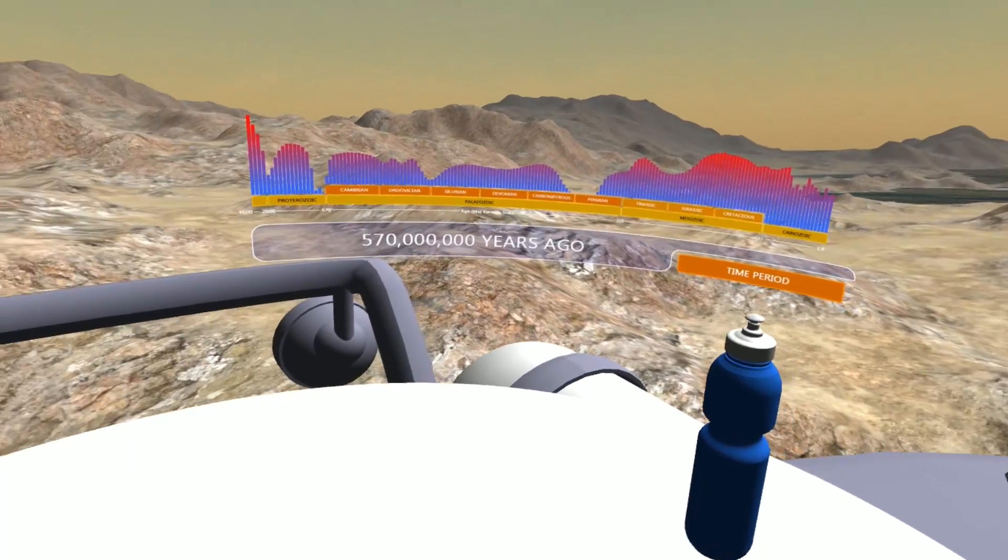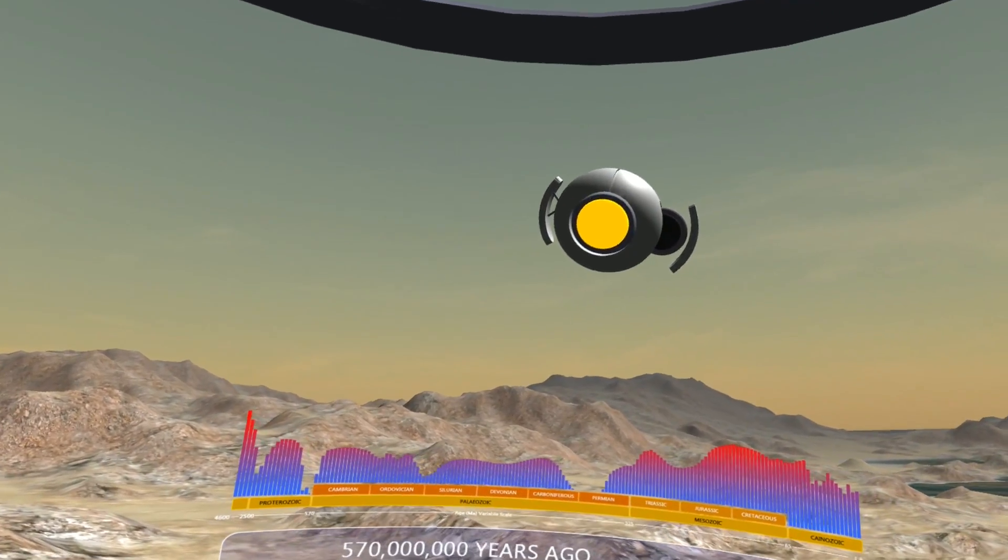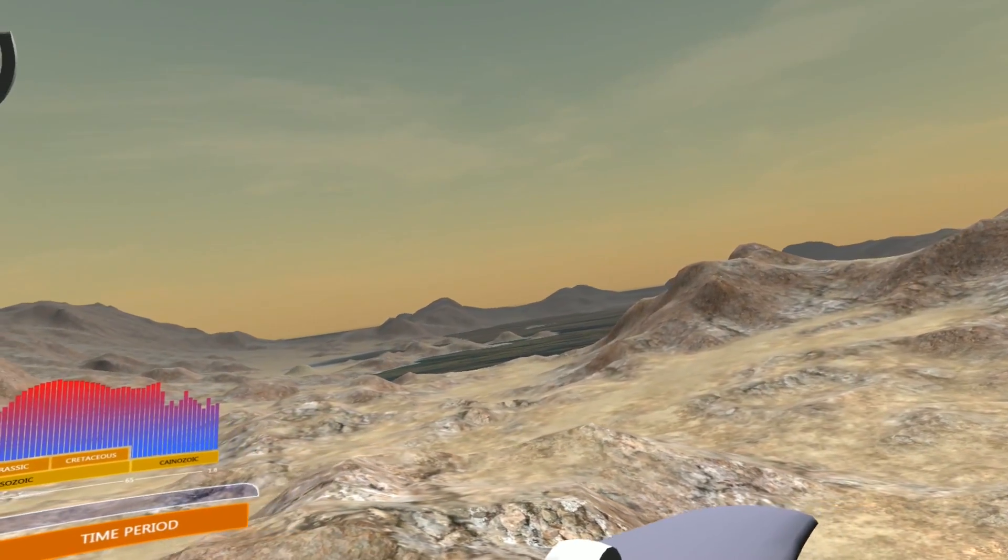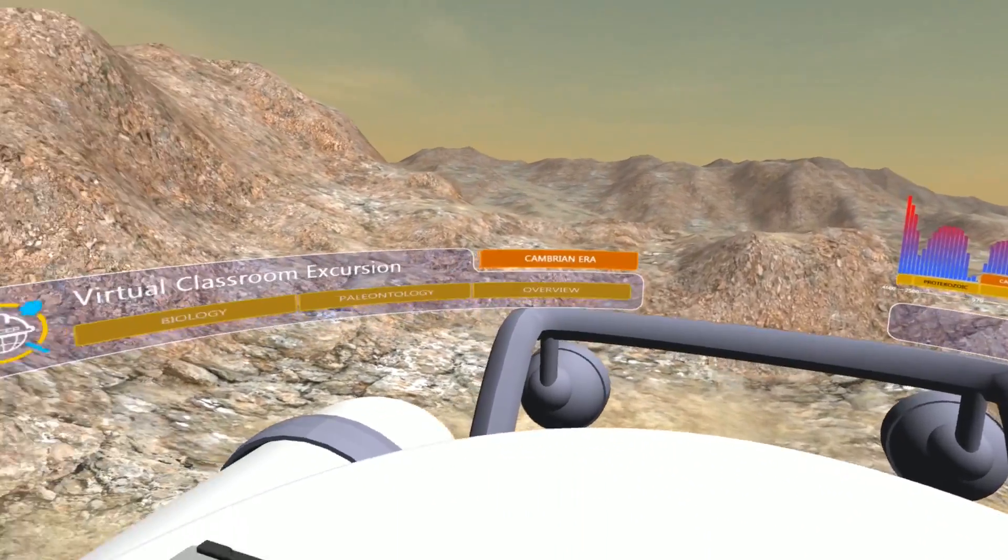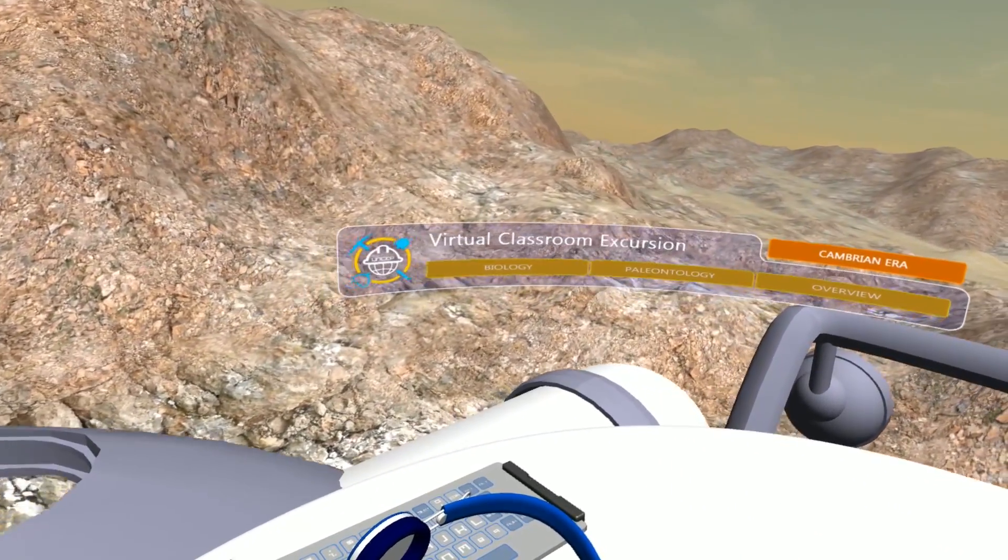Barren, desolate, lifeless. No birds fill the skies, nor fish the seas. The Cambrian Earth is totally void of all animals, trees, grasses, and insects.